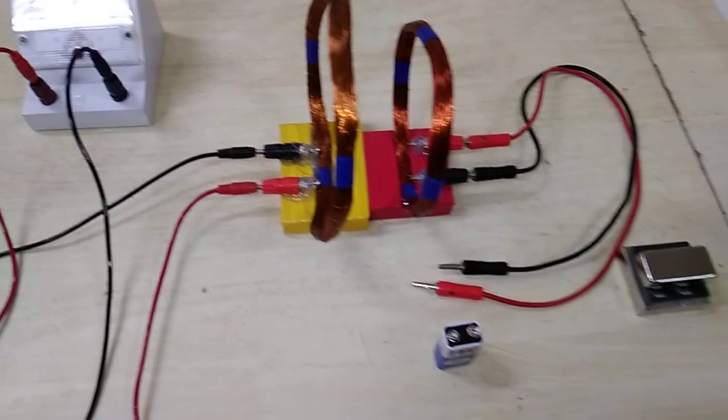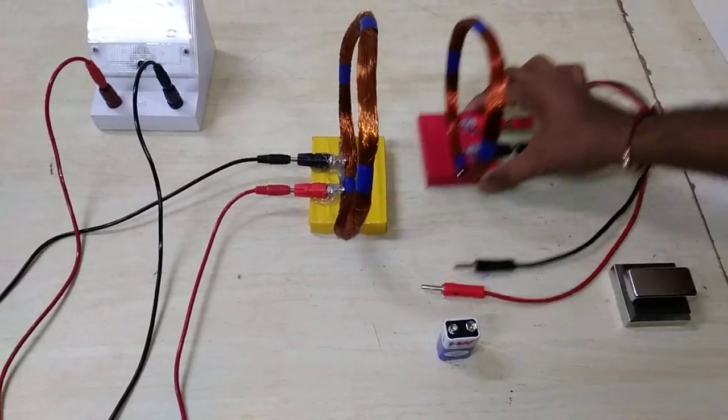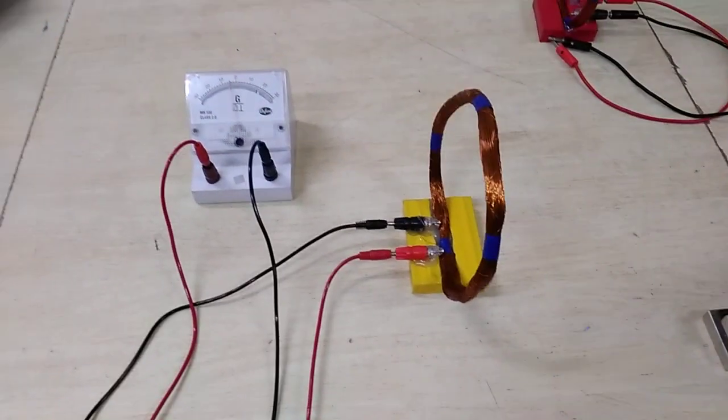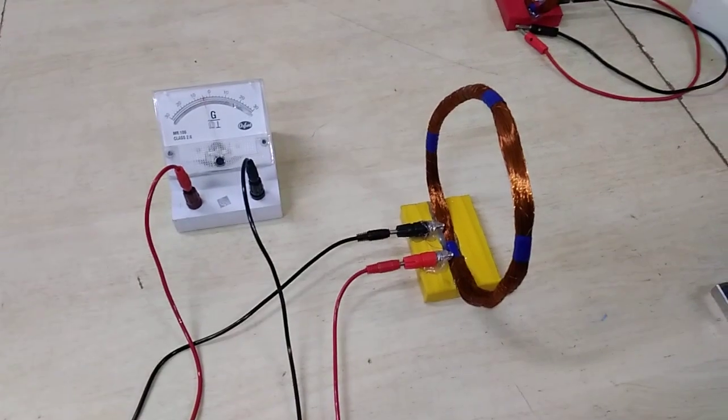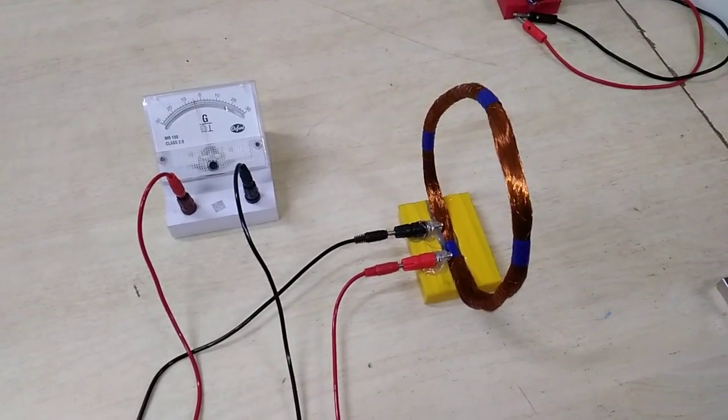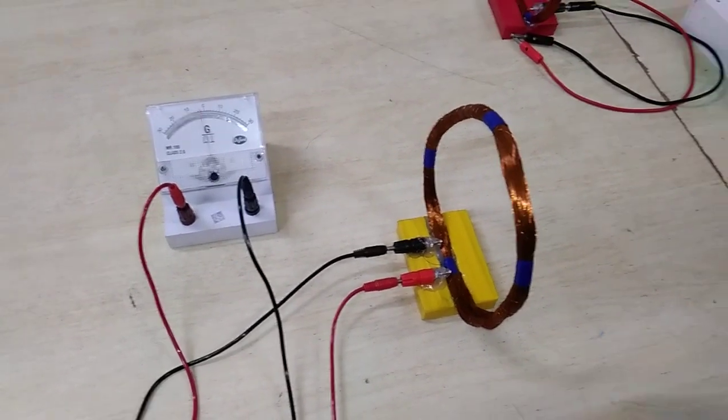First we will demonstrate the self inductance. Let us consider a coil which has n number of turns and we have connected this coil with a galvanometer. We will use a magnetic field in order to develop the flux.